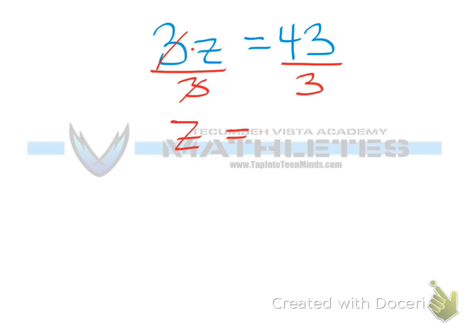39 would be 13, 42 would be 14, and we're left with one remainder. Out of 3, or 14.3 repeating.